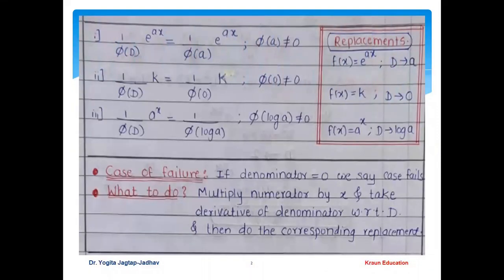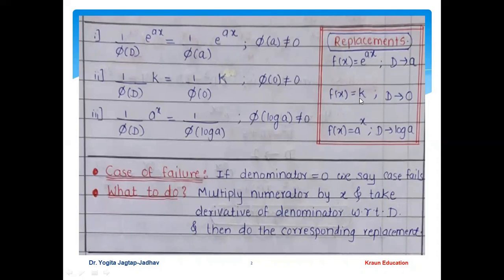These are the formulas for the exponential function. For 1/φ(D) operating on e^(ax), you replace D by a, where a is the coefficient of x in the exponent, provided φ(a) ≠ 0. For a constant term k, replace D by 0, provided φ(0) ≠ 0. For a^x, replace D by log(a), provided φ(log a) ≠ 0.